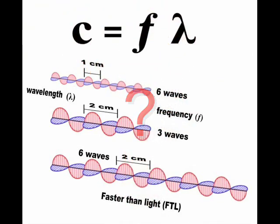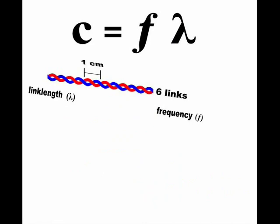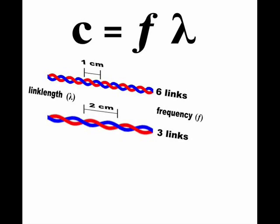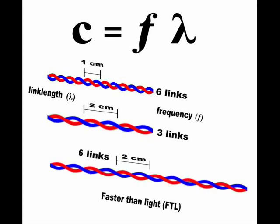Under the rope model of light, the longer you make the links, the fewer links you can fit in any given length of rope. The rope model justifies why frequency and wavelength are inversely proportional and why light is a constant. Maxwell's equation is the equation of a rope.